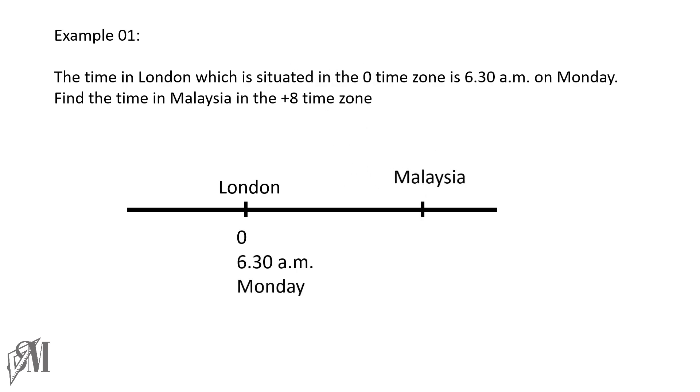Now from London to Malaysia, the time duration or the time gap is eight hours. Because it is moving to the right, we put +8. So then from 6:30, we must count eight hours forward to find the time in Malaysia. So simply what we do is we write 6:30, and to 6:30 we add eight hours like this, so we get 14:30.